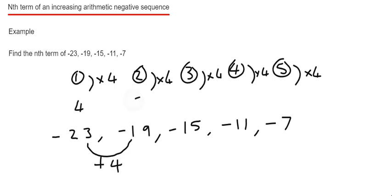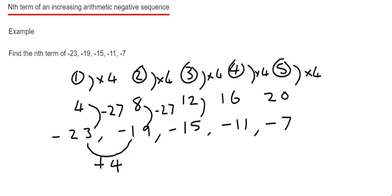So these are 4, 8, 12, 16, and 20. And then all I've got to do now is figure out what do I do to these 4 times tables to take me to the number underneath. So what do I do to 4 to get me down to minus 23? I'd have to subtract 27. And you can see this works for every single term — if we take 27 off each one, it takes me to the number in the sequence.